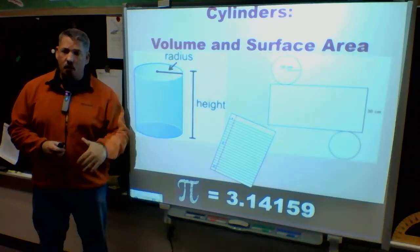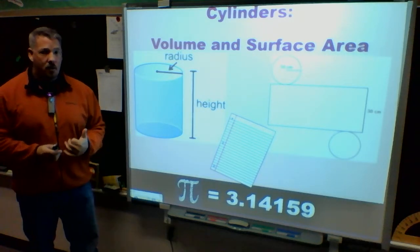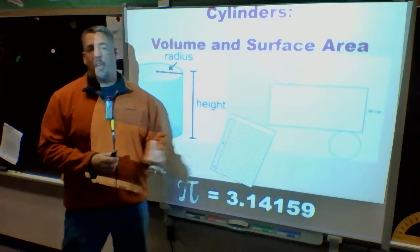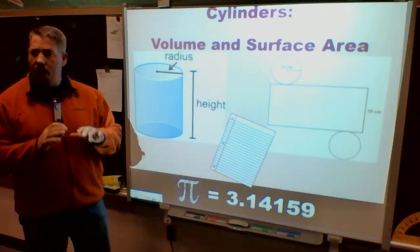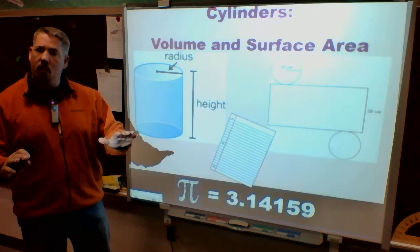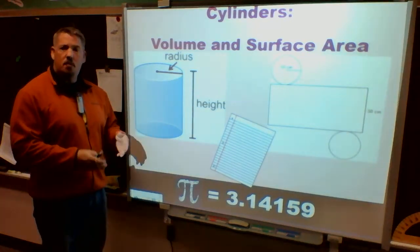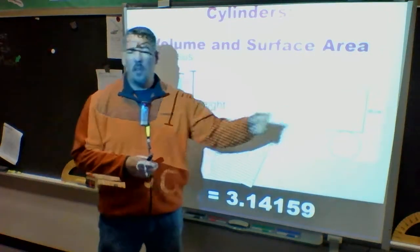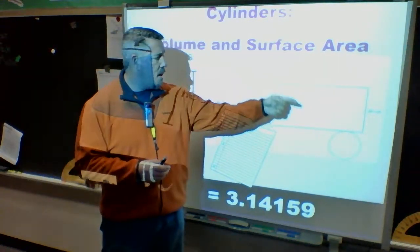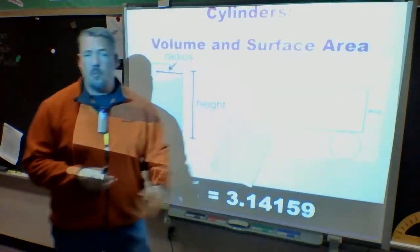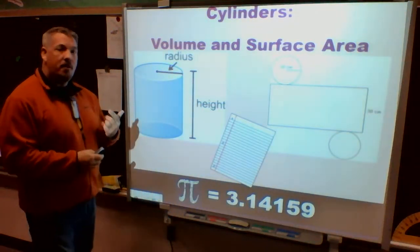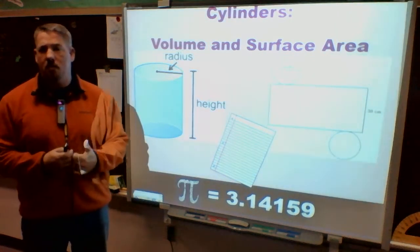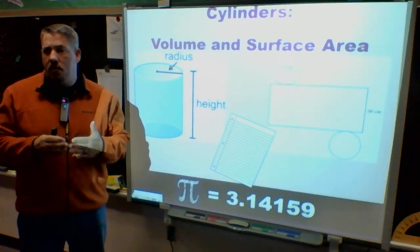We're going to find the volume, but we're also going to talk about the surface area, and that takes us back to nets. If I take a cylinder and I flatten it out, the outside of it that makes those lateral sides is actually a rectangle. The rectangle goes around, and then the top and the bottom are circles. I'm going to take all the things I've been working with and put them all together.